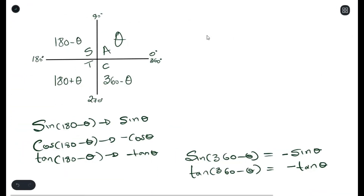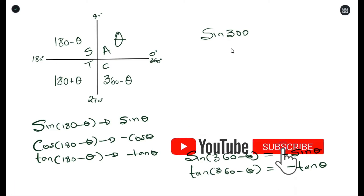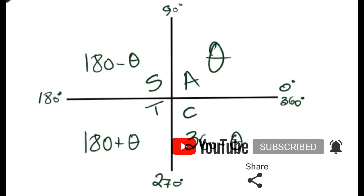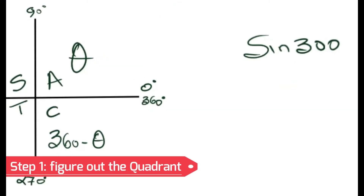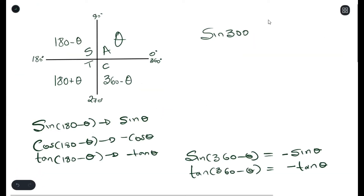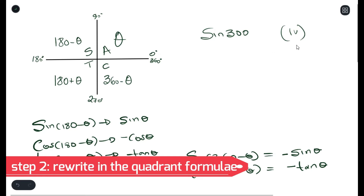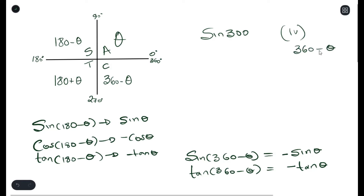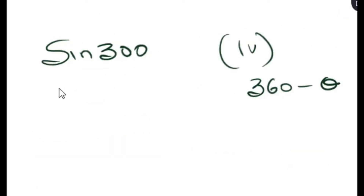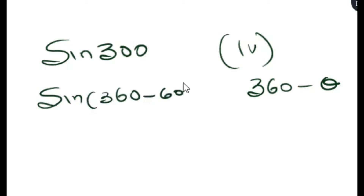What happens if you have actual values? For example, sine 300 — how do we reduce this using the reduction formula? The first thing you always do is look at which quadrant it falls under. We understand that 300 falls between 270 and 360, so it's in the fourth quadrant. We then rewrite 300 using the equation of the fourth quadrant, which is 360 minus theta, giving us 360 minus 60.